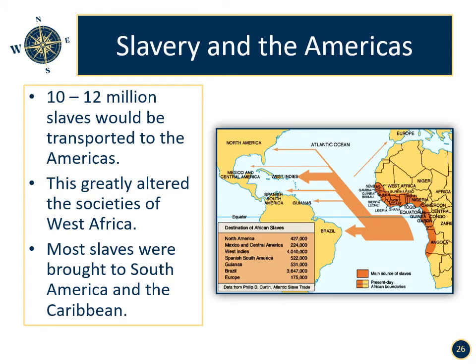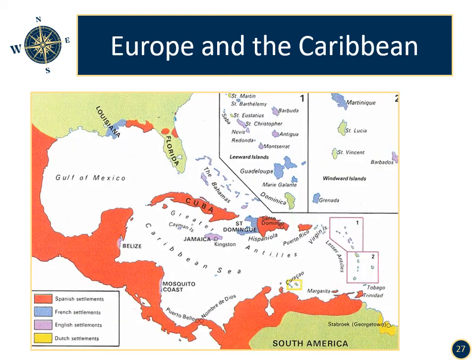Slavery and the Americas. Ten to twelve million slaves would be transported to the Americas, greatly altering the societies of West Africa. Most slaves were brought to South America and the Caribbean. The worst environment to be a slave was in the Caribbean, where they worked on sugar plantations. The work was brutal and owners found it more profitable to work a slave to death and buy new ones. These conditions would lead to a higher amount of revolts in the region. Slavery took root in the southern portion of French and British territories due to the climate and geography. The Spanish controlled much of Central America and the Caribbean, while the French, British, and Dutch controlled various islands within the region.